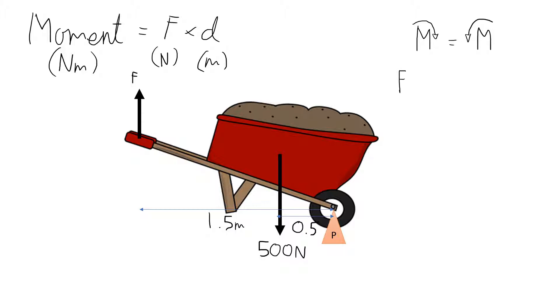So, F would need to equal to, so that would be the, F would be the one that would be going clockwise. So if you kept this F going round the pivot, it would go round clockwise. So, F would need to equal, F times 1.5, that's the distance from the pivot point, would need to be equal to 500 newtons times 0.5.